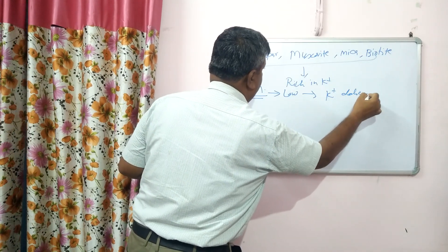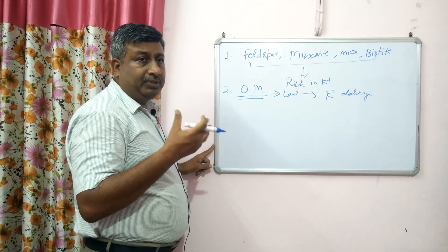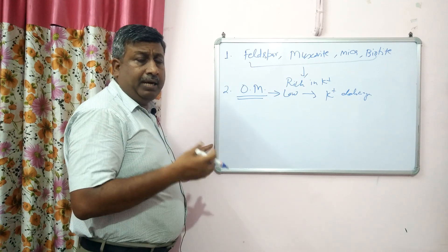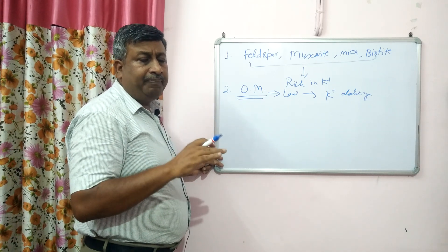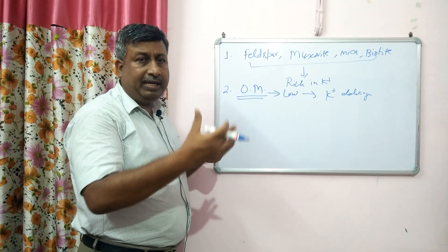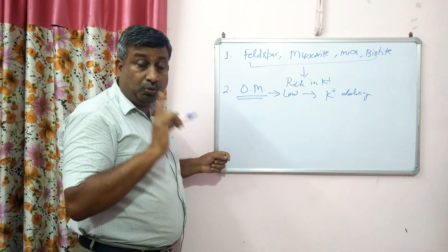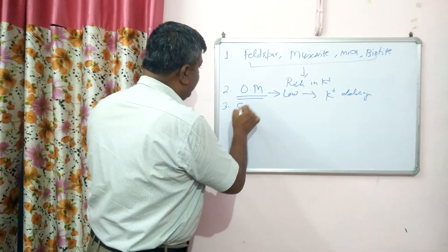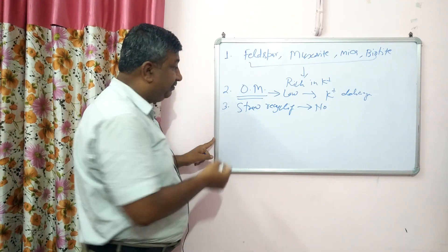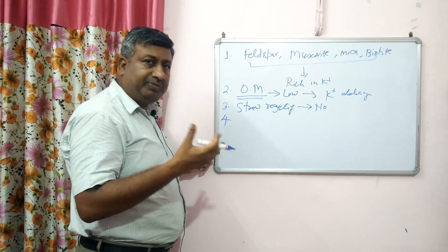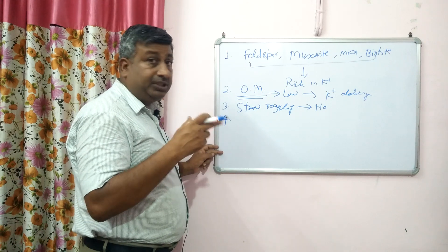The second factor is organic matter. Organic matter is an important source of potassium — if organic matter is low, potassium deficiency can occur. That is why applying FYM, compost, or crop residue is important. Crop residues contain a good amount of potassium because potassium is not translocated from straw to grain — maximum potassium remains in the straw. Therefore, straw recycling is very important, and fields without straw recycling are prone to potassium deficiency.